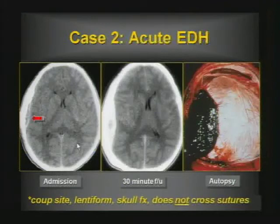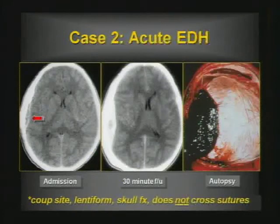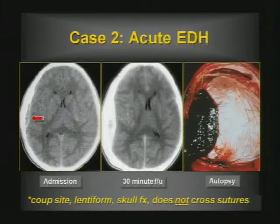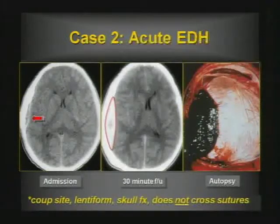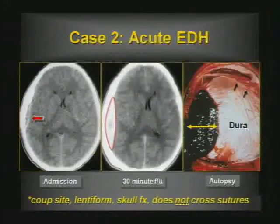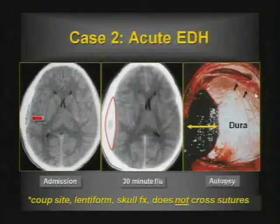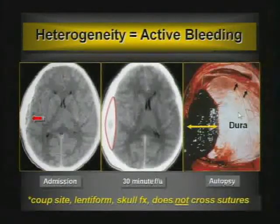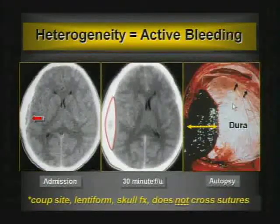Case two makes one particular point about epidural collections at the coup site, which tend to be lentiform. The majority are associated with skull fractures, and epidurals do not cross sutures — just the opposite of subdurals. You can see low-density areas in an epidural that predict active expansion — this is called the swirl sign. When you see low-density areas in an epidural hematoma, get on the phone and call the neurosurgeon because that generally indicates active hemorrhage.